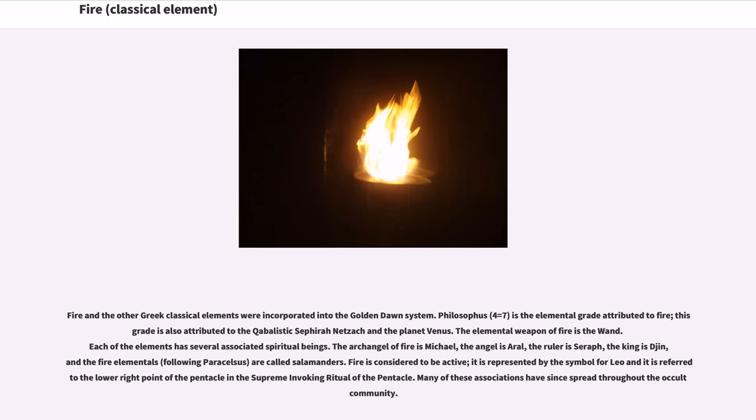Fire and the other Greek classical elements were incorporated into the Golden Dawn system. Philosophus, 4 equals 7, is the elemental grade attributed to fire. This grade is also attributed to the Kabbalistic Sephira Netzach and the planet Venus.